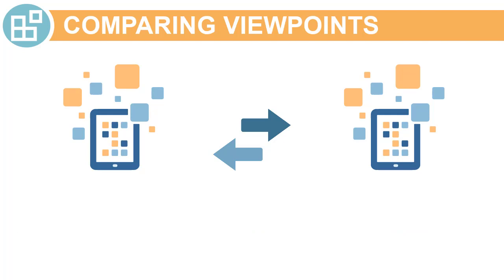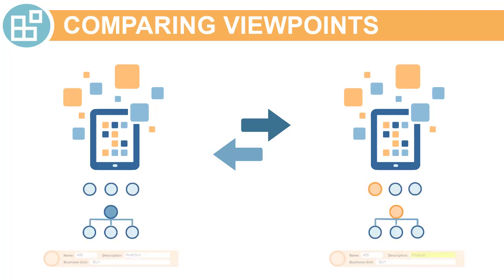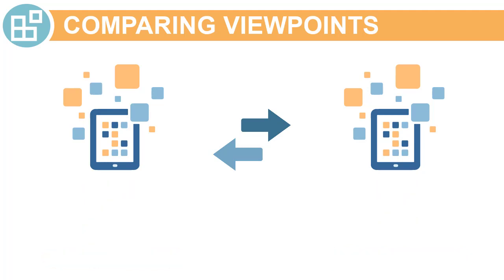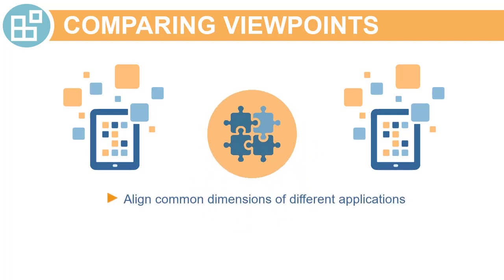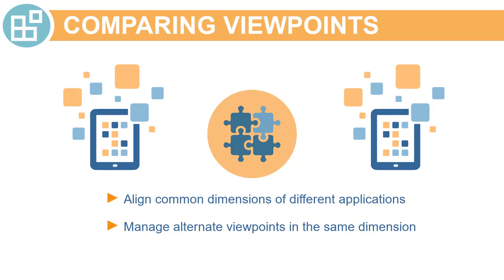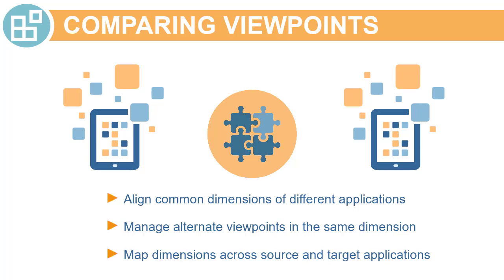You can run multiple types of comparisons at the same time. For example, you can simultaneously run a comparison for missing nodes, parent relationships, and property values. The ability to compare data from different viewpoints is an integral part of being able to align business perspectives and synchronize data across applications. Comparing viewpoints helps you align common dimensions of different applications, manage alternate viewpoints in the same dimension, and map dimensions across source and target applications.